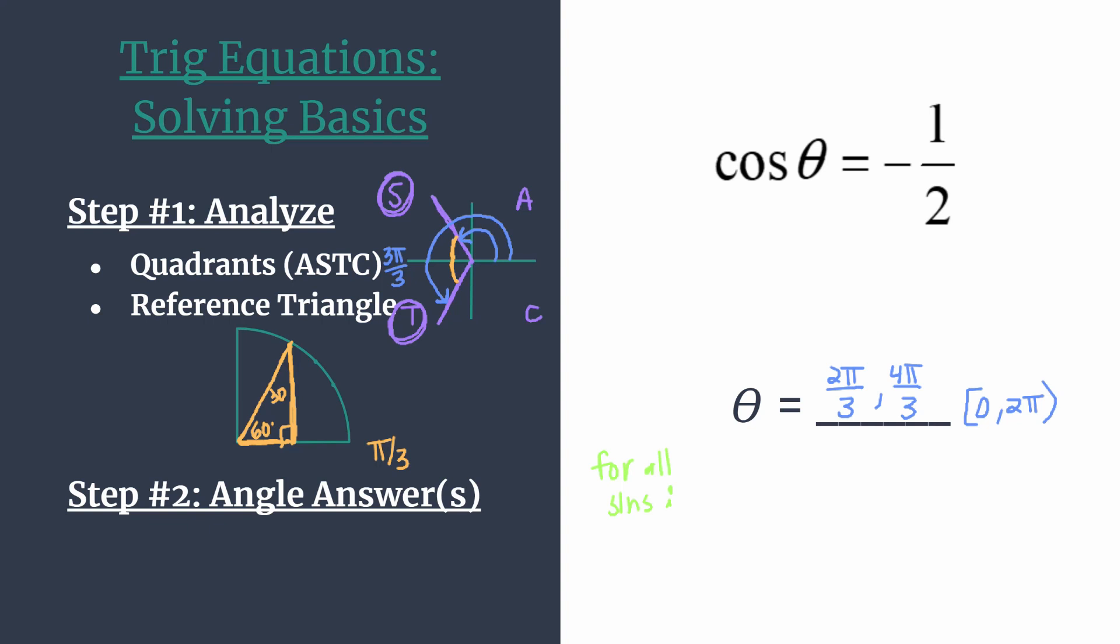And so we can write this solution in a really clever way. We'll write two equation solutions. So let's start with the quadrant 2 angle first. We're going to say that theta can be 2 pi over 3 plus 2 pi k, where k is any integer.